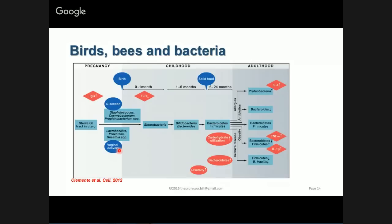When you are born through C-section where they cut open and go through the uterus, the bacteria that colonize the baby's gut are very different than after vaginal delivery. Our gut microbiomes may start off differently. However, over the first few months, the Enterobacteria tend to dominate. Once we get into the one-to-six month stage, we start to see Bacteroides and Bifidobacteria dominating.